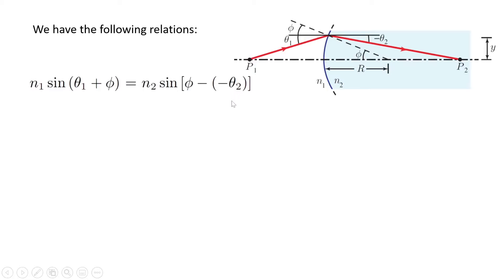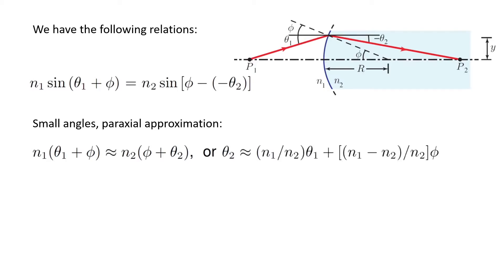In the paraxial approximation, the angles are so small that I can substitute sine of an angle with the angle itself. So I can write n1 times (theta 1 plus phi) is almost equal to n2 times (phi plus theta 2).